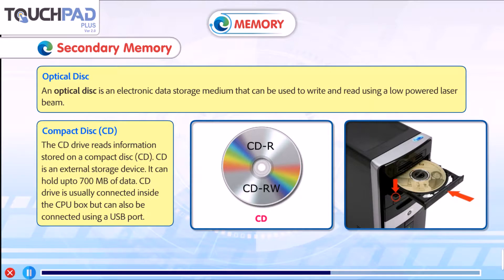Compact disk: the CD drive reads information stored on a compact disk. A CD is an external storage device. It can hold up to 700 MB of data. The CD drive is usually connected inside the CPU box but can also be connected using a USB port.